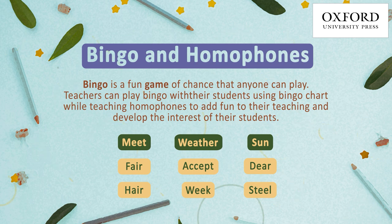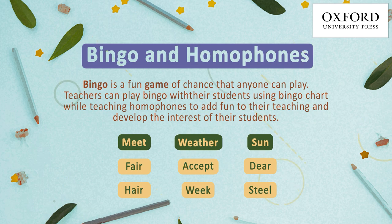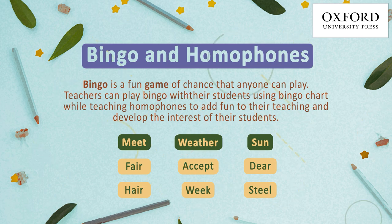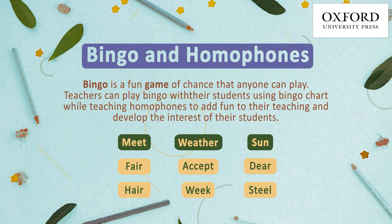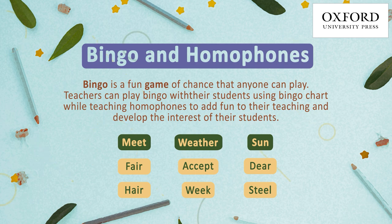While selecting words from the list, they should keep in mind that they cannot select the same pair of words. For example, if they select the word accept spelled as A-C-C-E-P-T, then they will not choose except spelled as E-X-C-E-P-T as their second word.